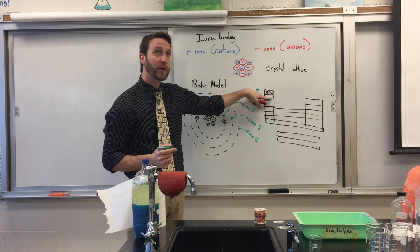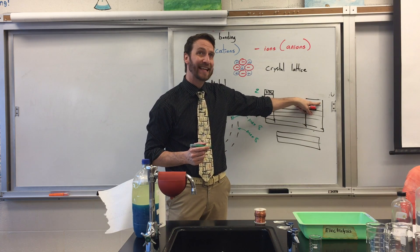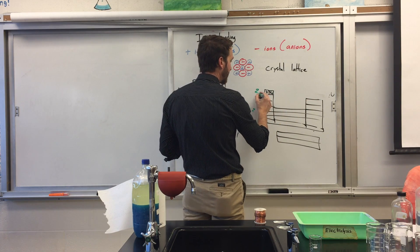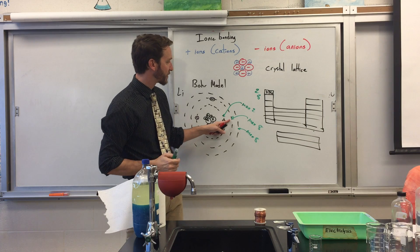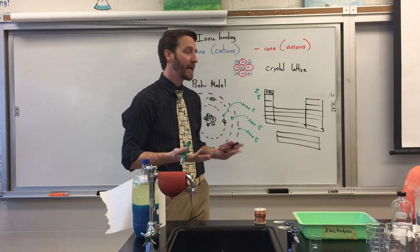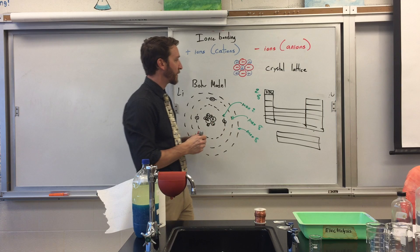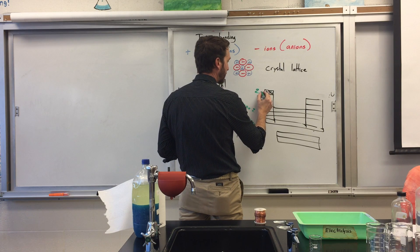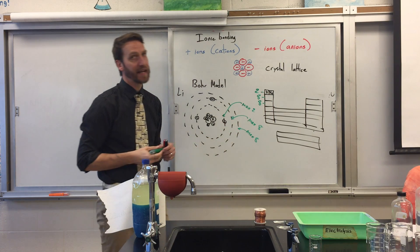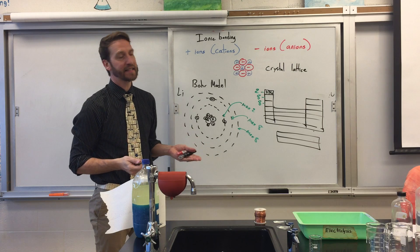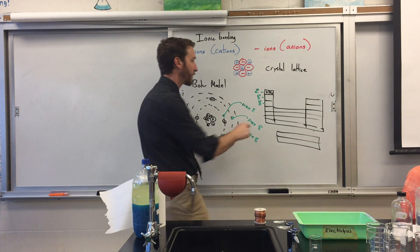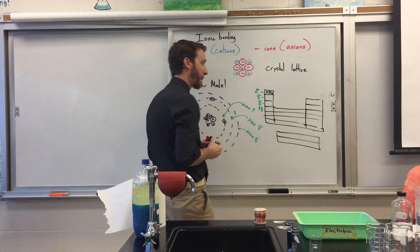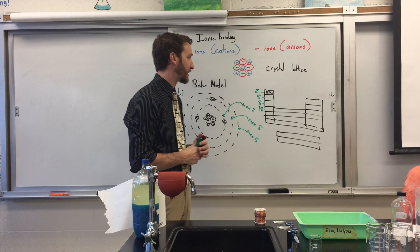If you look at the second row, it has two elements on the left — lithium and beryllium — and six elements on the right, from boron to neon. Two plus six gives eight total elements, which corresponds to the second ring holding eight electrons. The third row similarly has two on the left and six on the right, for eight total elements, matching the third ring holding eight electrons. And as I said, the fourth ring holds 18, and if you add up all the elements in that row, you get 18. So the periodic table matches the way the electrons are distributed.